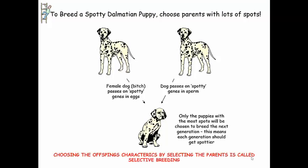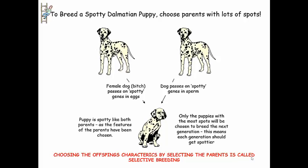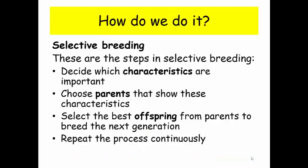So this process of choosing the offspring characteristics by selecting the parents with those characteristics is called selective breeding. The puppy is spotty like both its parents because the features have been chosen from the parents.